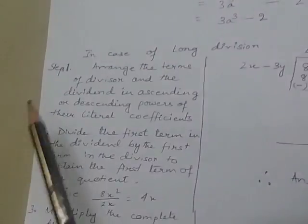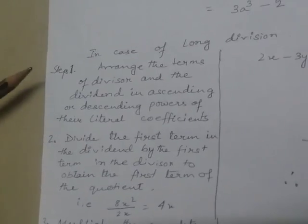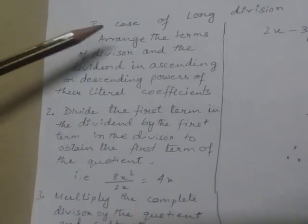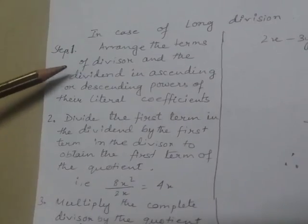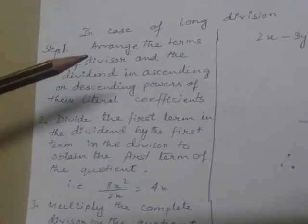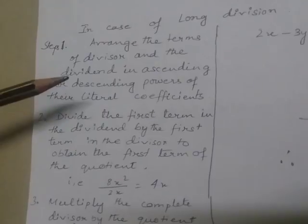In case of long division, first let me explain the steps. Arrange the terms of divisor and dividend in ascending or descending powers of the literal coefficient.